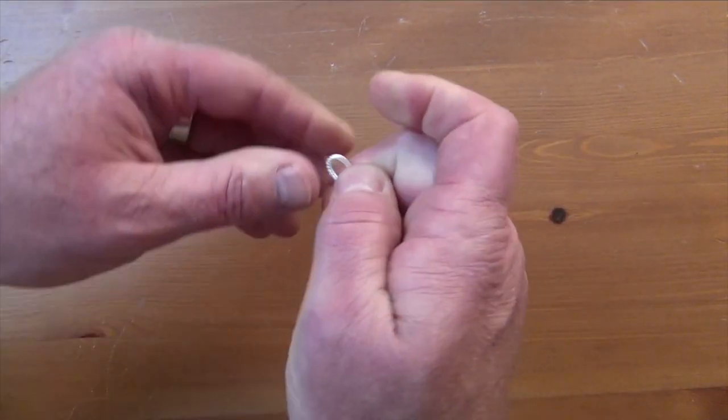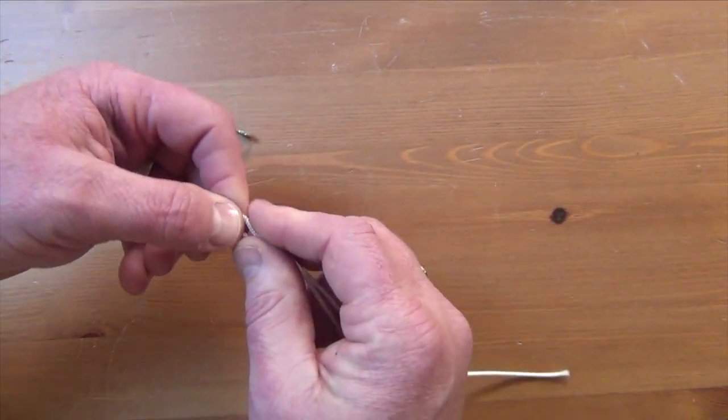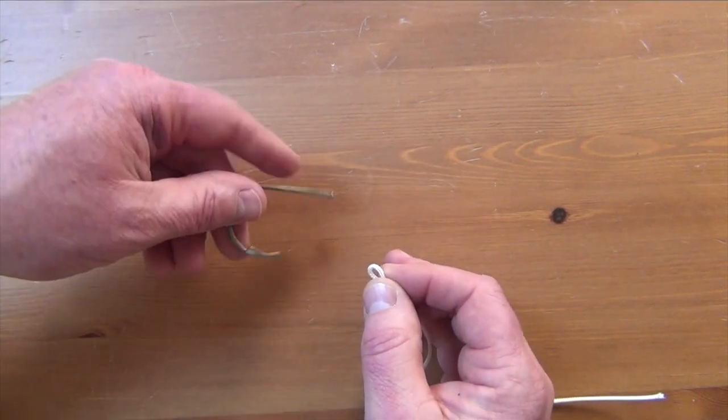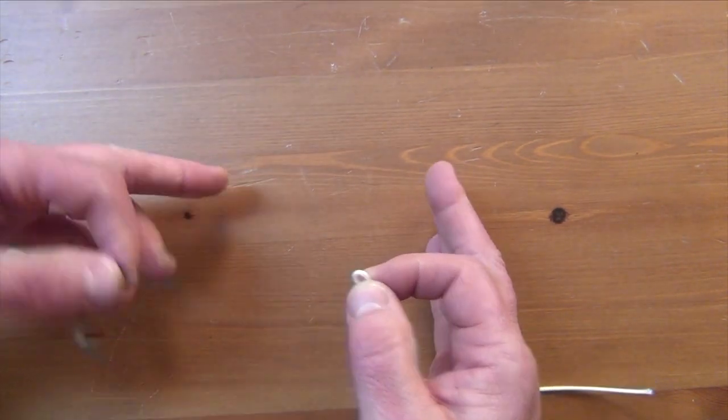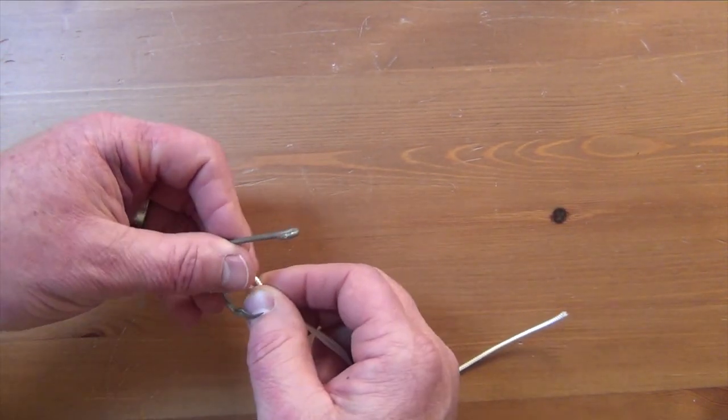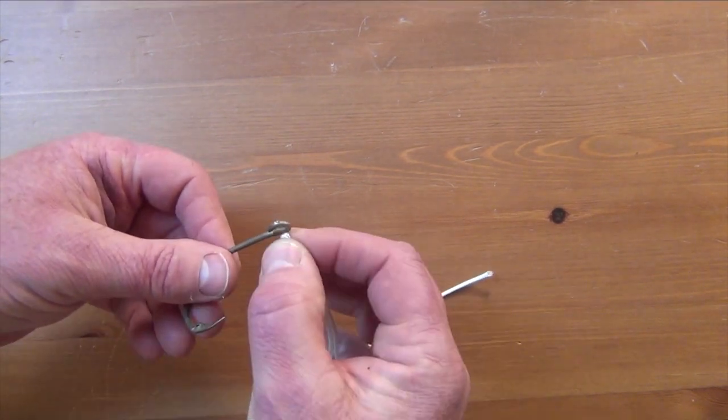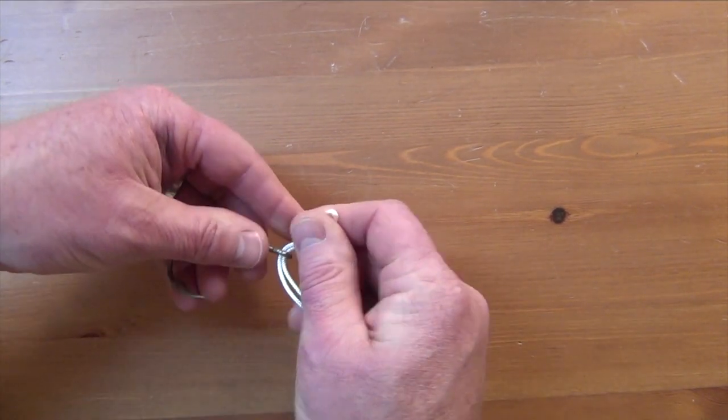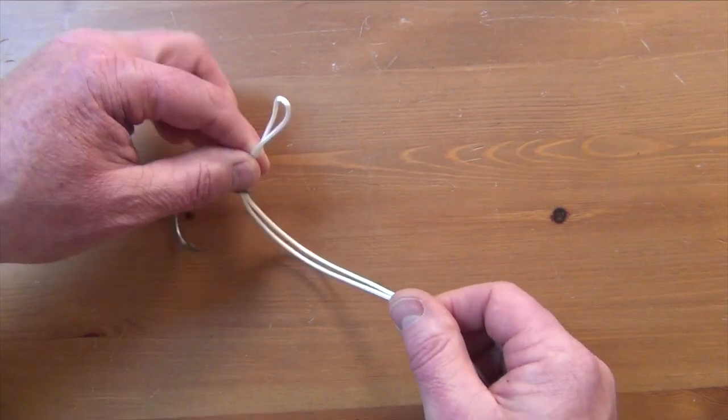All you're going to do is take your line, double it over. You need enough so that you can pass whatever it is you're tying, whether it's a hook or maybe a quick fish, back through the eye of the Palomar knot. So we've doubled over, we're going to go through the eye of what we're tying onto.